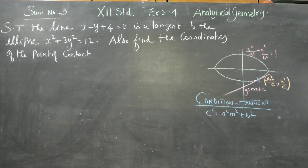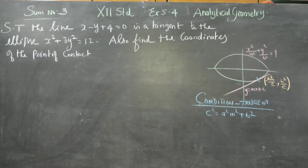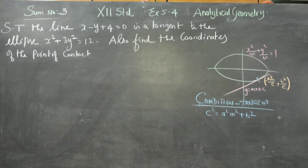Dear 12th standard students, in exercise 5.4, sum number 3: show that the line x minus y plus 4 is a tangent to the ellipse, and also find the coordinates of the point of contact.